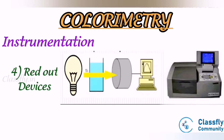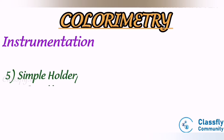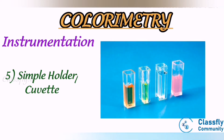Fourth, readout devices: the detector response can be measured by any of the following devices — galvanometer, meter, recorder, digital readout — and the signal may be transmitted to a computer or printout device. Fifth, sample holder or cuvette: cuvettes are rectangular, square, or circular cells made of optical glass for visible wavelengths, with capacity of 3 ml, 2 ml, or 1 ml.